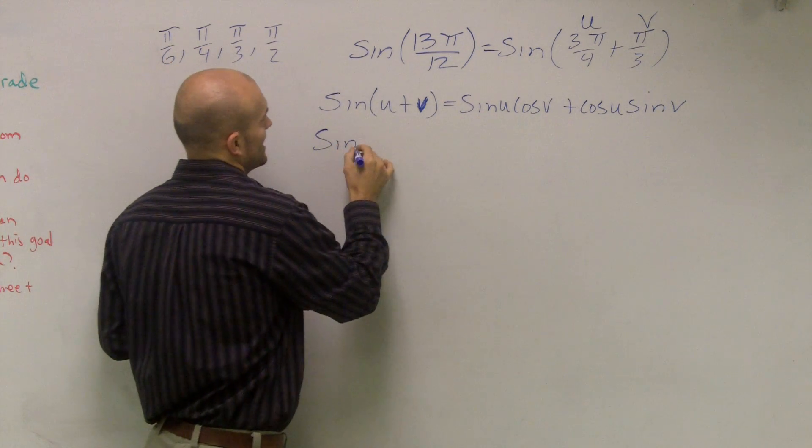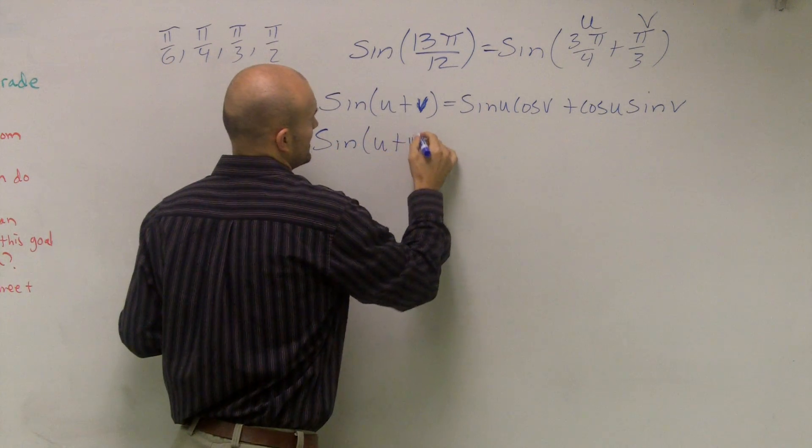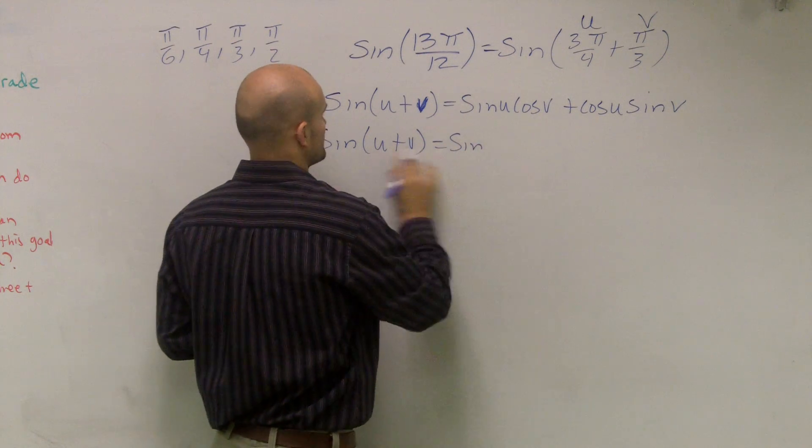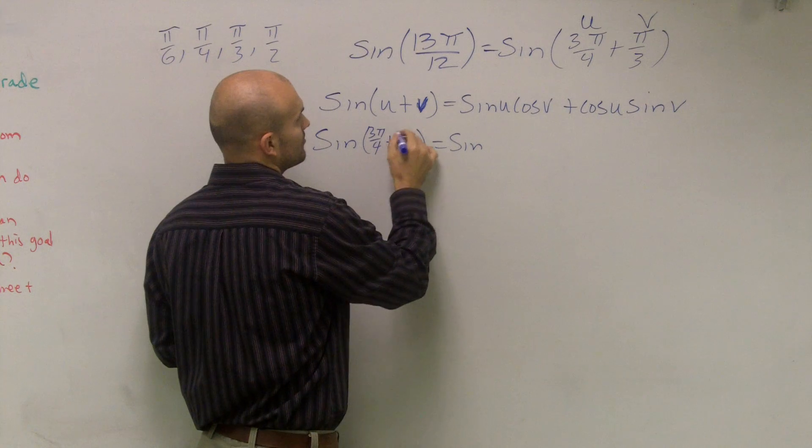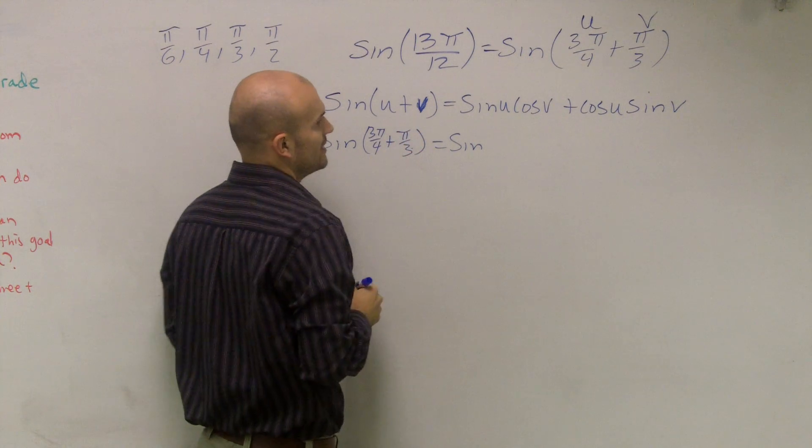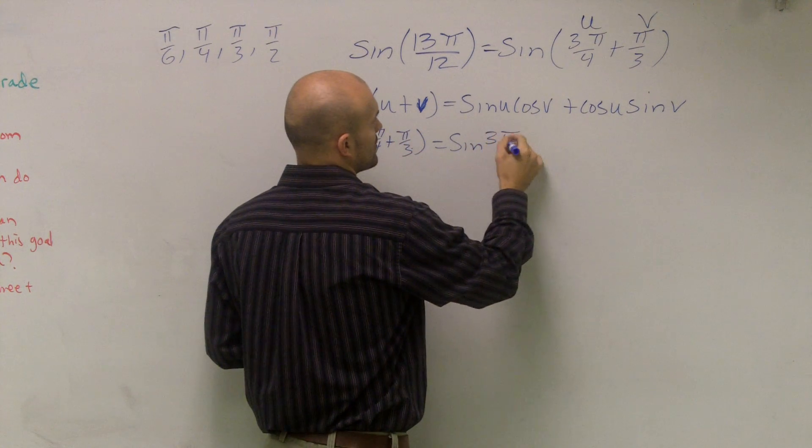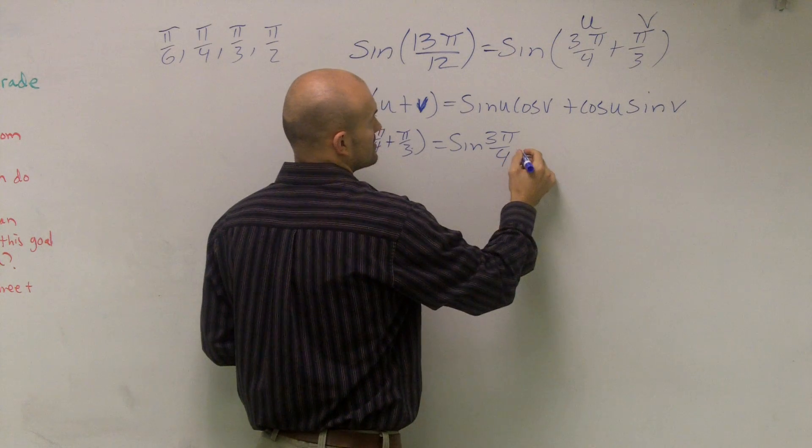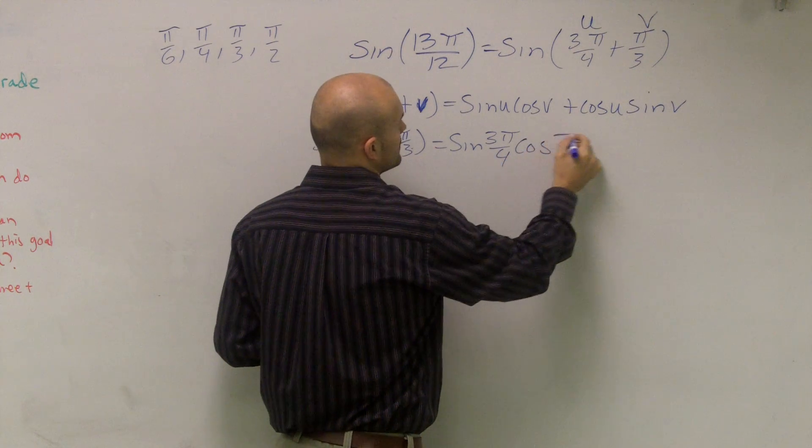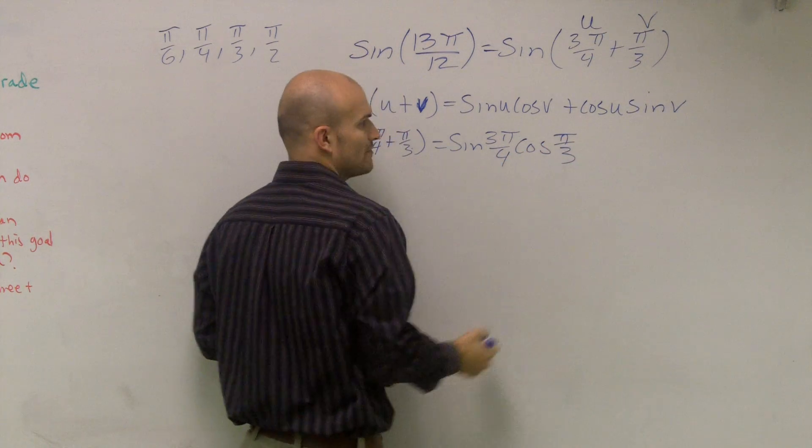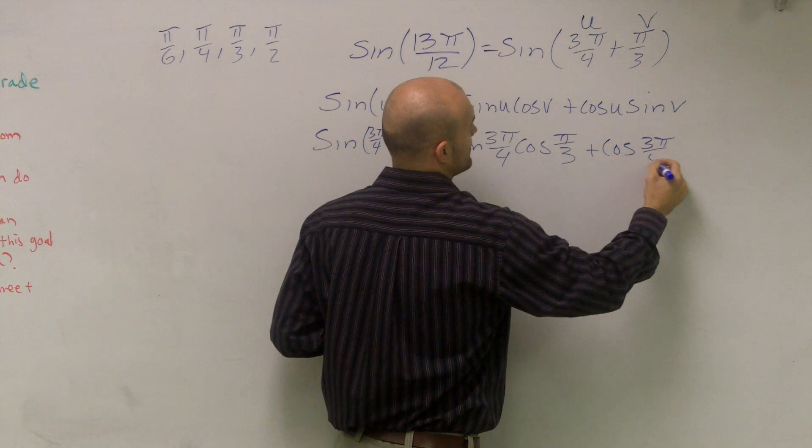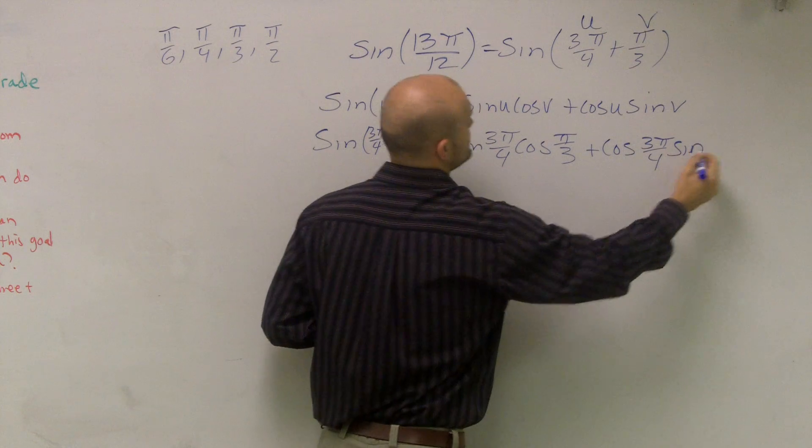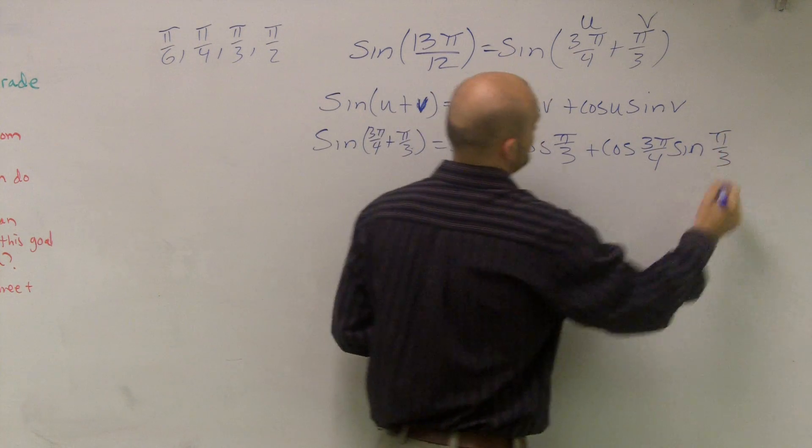So now what I'll do is I'll write sine of u plus v equals sine of 3π over 4 plus π over 3 equals the sine of u, which is 3π over 4 times the cosine of π over 3 plus cosine of 3π over 4 times the sine of π over 3.